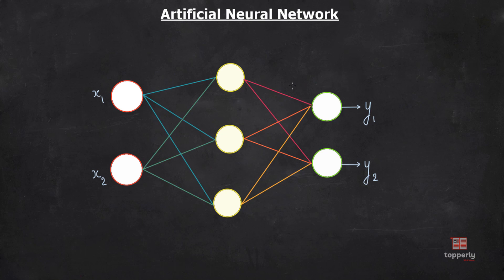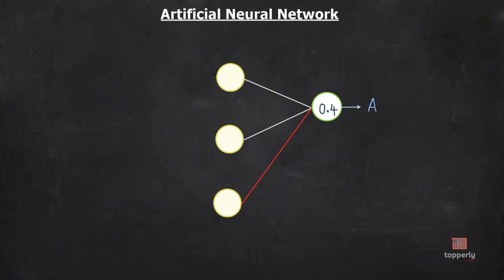Consider a neural network used to classify an input pattern into two classes: class A and class B. The neuron dedicated for class A gets activated when a class A input comes in. Initially, the network is not properly trained, so when we provide a class A input the activation of the neuron corresponding to class A is only 0.5. We need to increase that activation. Positive correlations between neurons are represented with white synaptic connections and negative correlations with red synaptic connections.